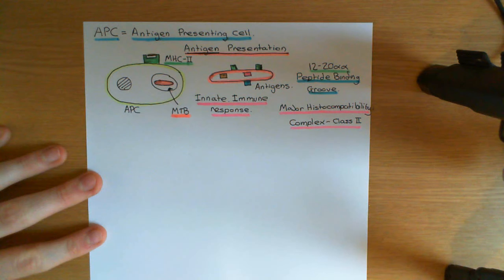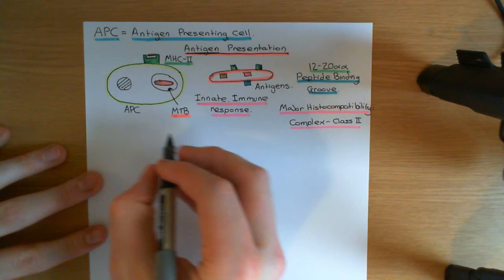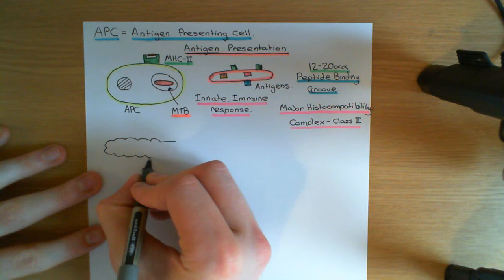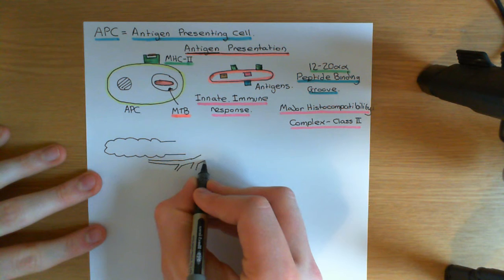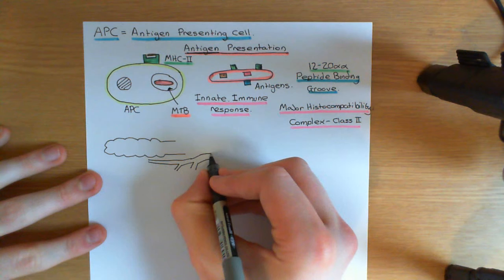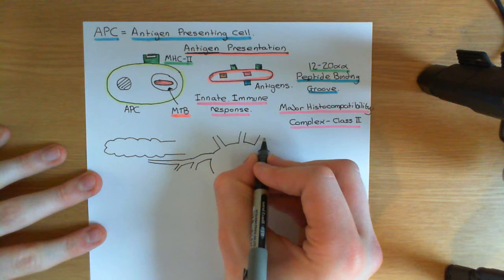One of the major places that T cells are found is in lymph nodes. The antigen presenting cell is going to find T cells by draining through the lymphatic vessels to the mediastinal lymph nodes, which drain the lung. The lymphatic vessel gradually joins up with others to become larger and larger, eventually leaving the lung and draining into one of the mediastinal lymph nodes.